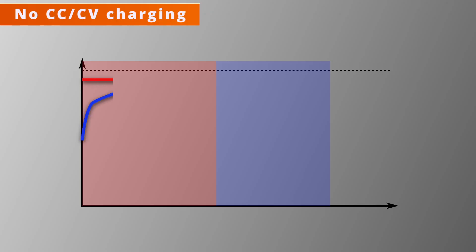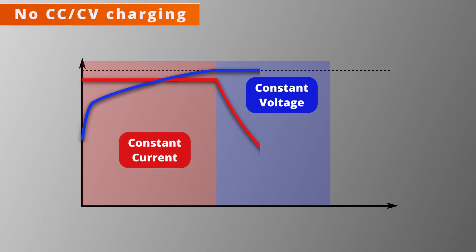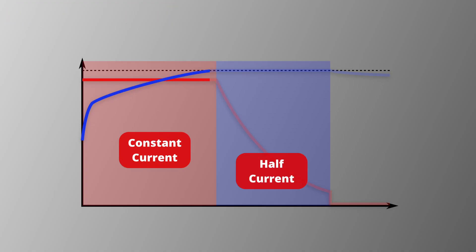DeWalt chargers do not use constant current constant voltage charging which is the recommended method for lithium ion. Instead they charge at constant current until the battery reaches a voltage threshold. Then it drops back to half of the original current until it hits a second threshold. Then charging stops.